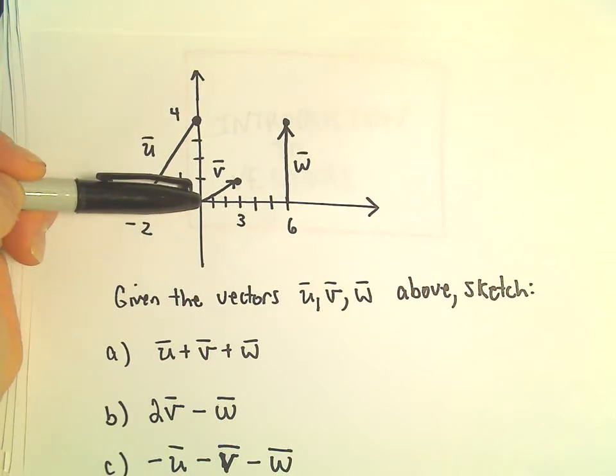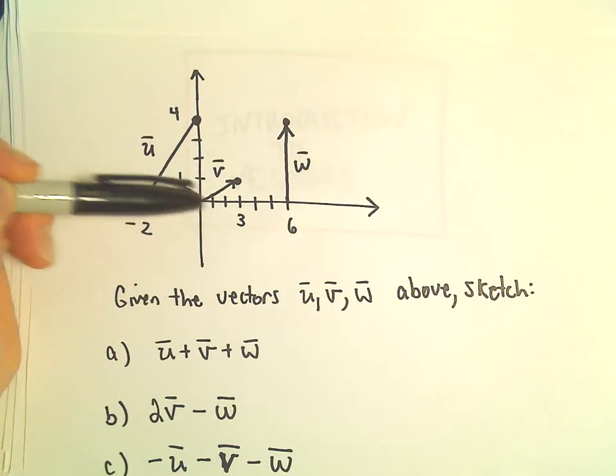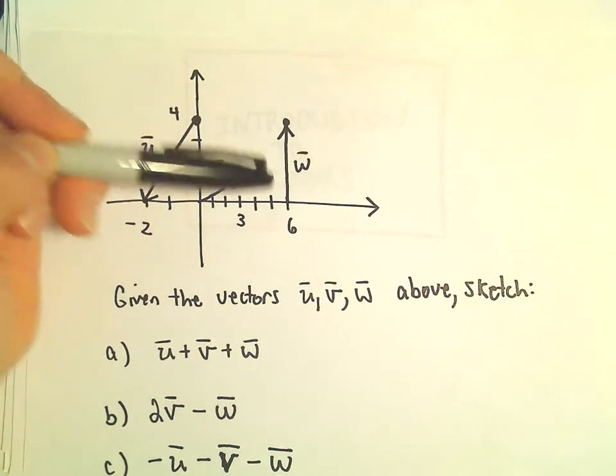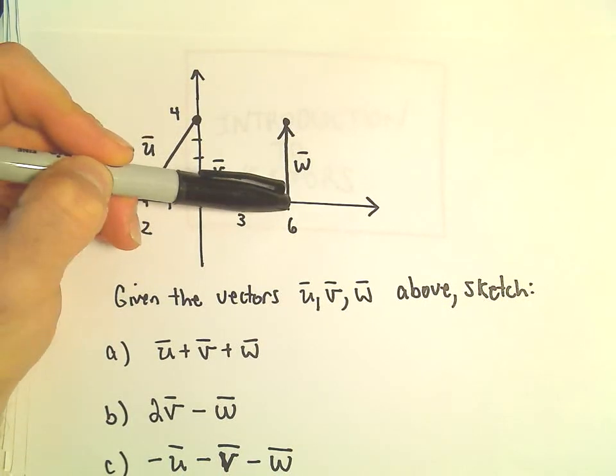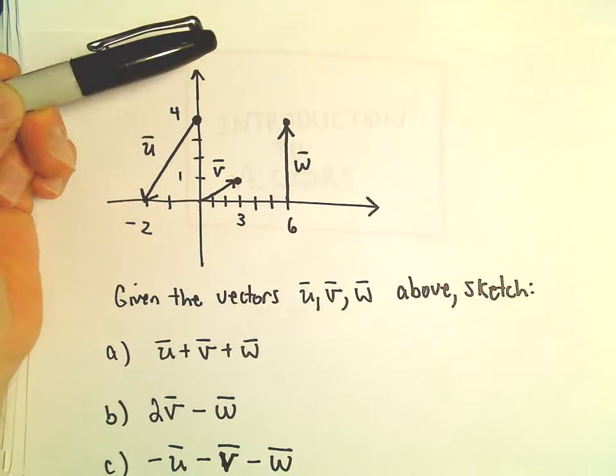We have v that starts at the origin and stops at the point (3,1). And then we have the vector w that starts at (6,0) and stops at (6,4).